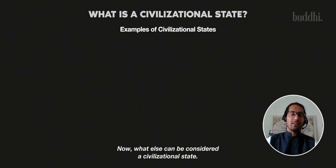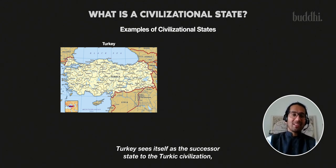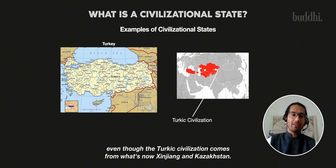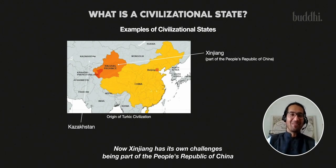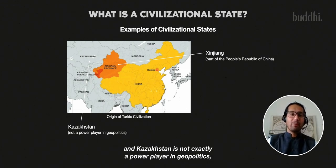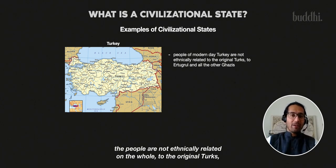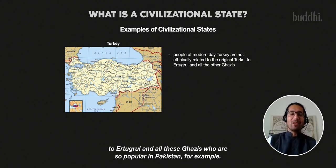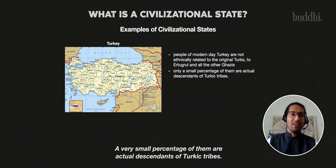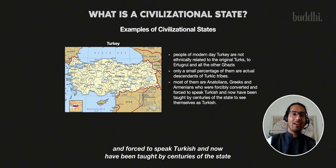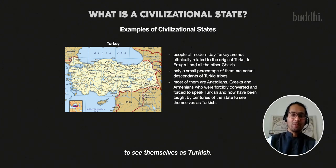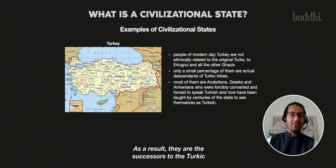Turkey is a very interesting example. Turkey sees itself as the successor state to the Turkic civilization, even though the Turkic civilization comes from what is now Xinjiang and Kazakhstan. Xinjiang has its own challenges being part of the People's Republic of China, and Kazakhstan is not exactly a power player in geopolitics. This leads to the bizarre situation where modern-day Turkey's people are not ethnically related on the whole to the original Turks — to Ertugrul and the Ghazis so popular in Pakistan, for example. A very small percentage are actual descendants of Turkic tribes; most are Anatolians, Greeks, and Armenians who were forcibly converted and forced to speak Turkish, and have been taught by centuries of the state to see themselves as Turkish.